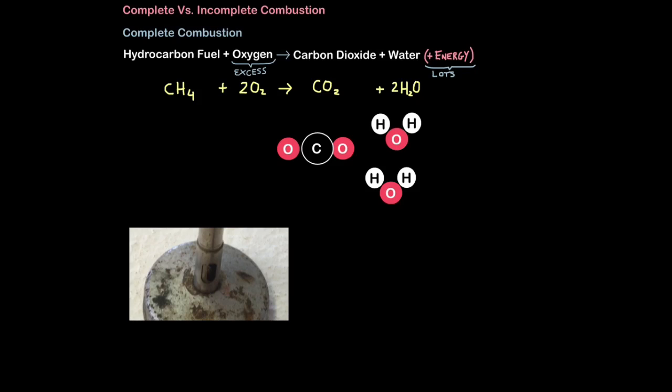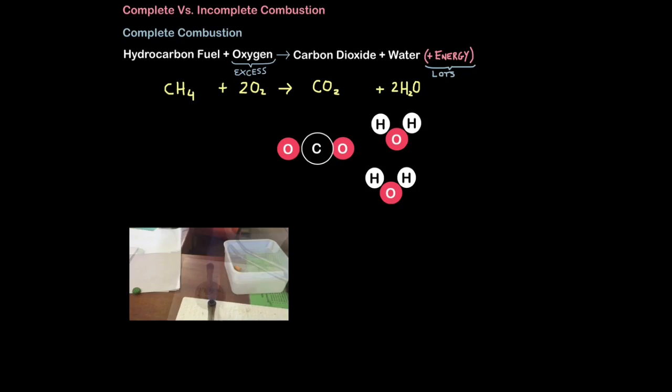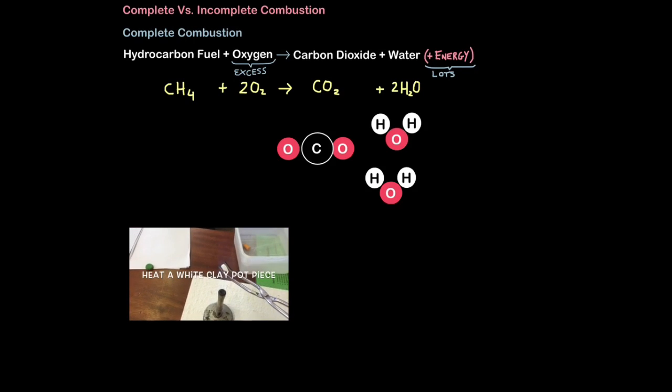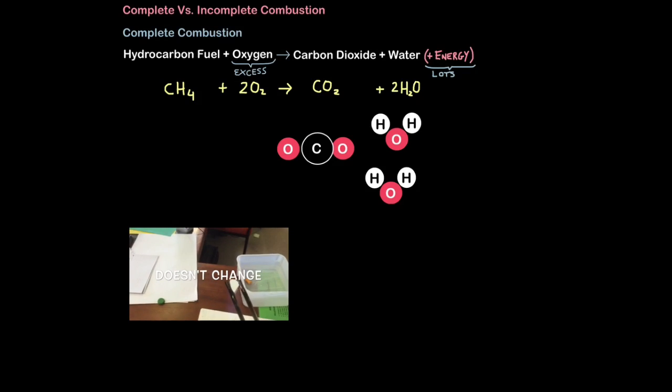You can test complete combustion really easily in a lab. You just need a Bunsen burner and a white clay pot fragment. To test complete combustion, you must have the Bunsen valve open so plenty of oxygen can get in. Valve open. You heat the Bunsen. You can see a blue flame and you're putting the clay pot above. Now what you'll notice is there's no change in its color. This will only really make sense when we compare it to incomplete combustion.